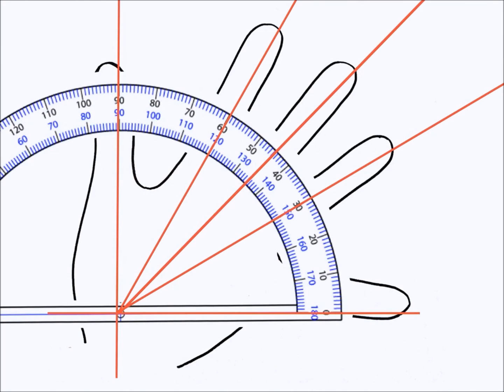Here we have the protractor and the hand with the lines on it. Let's measure these angles. From here to here we have 30 degrees. From here to here we have 45. And from here to here we have 60. And voila! You can measure angles with your hands. But remember, it's just an approximation.